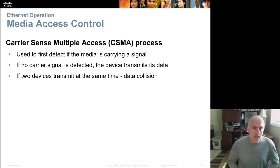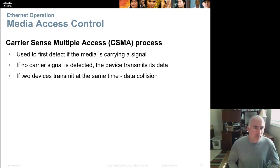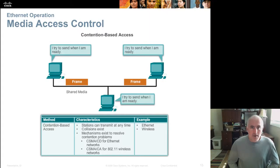CSMA technology is used to detect collisions. Like the analogy of pulling out of a parking lot onto the road, CSMA tells the computer to listen to the wire before it starts sending bits and verify that no one else is sending at the same time.